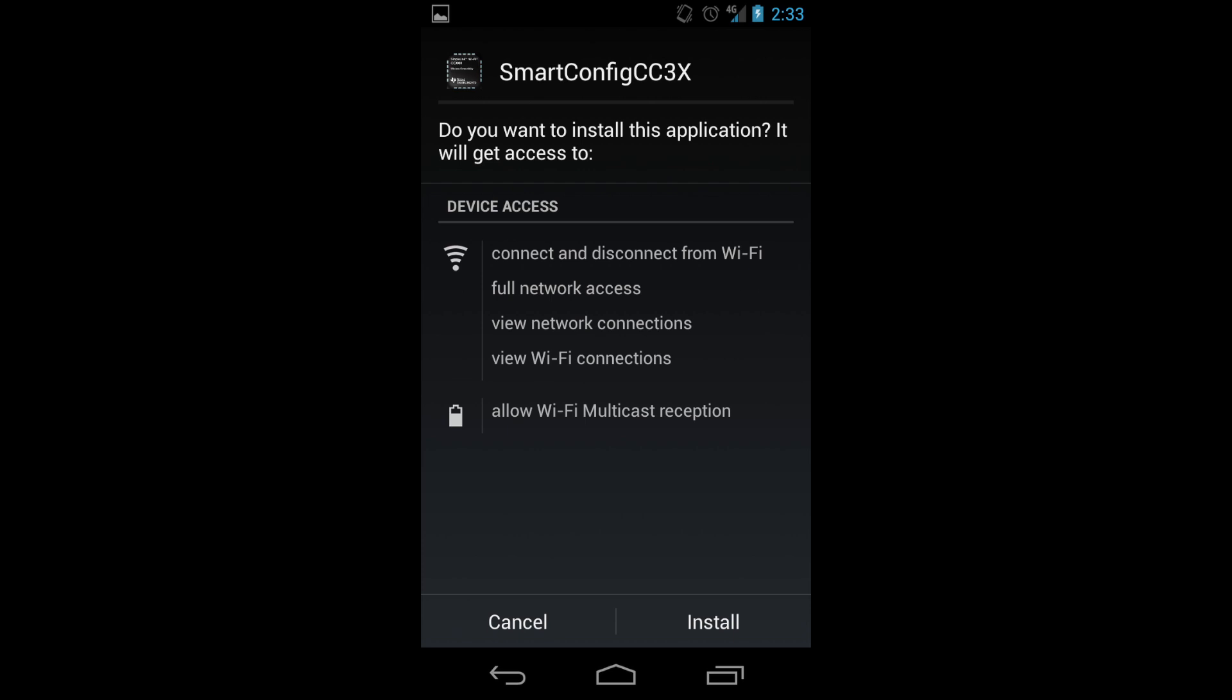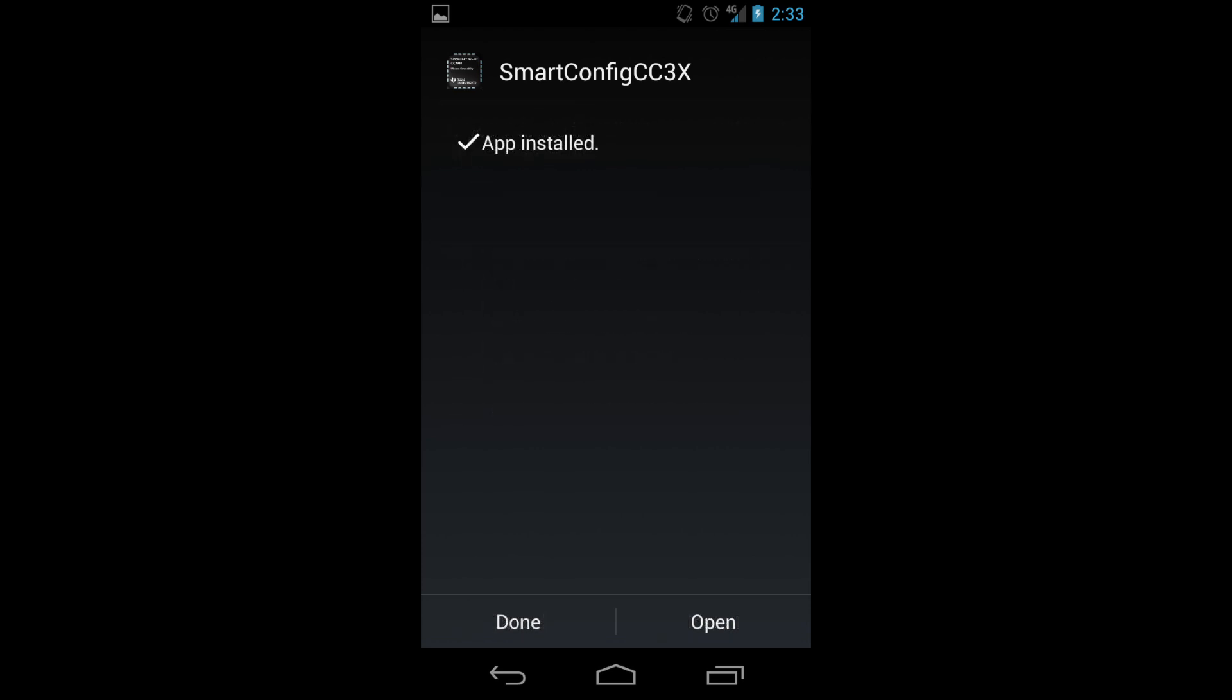Something that makes the CC3000 very important is its ability to attach itself to a network using a smartphone app. So TI created something called Smart Config that allows you to send a packet to the CC3000 and then have it connect to an access point. That makes it really easy to program this or connect it to an access point without having to reprogram it.